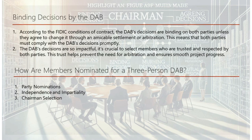For a three-person DAB, each party nominates one member, who must then be approved by the other party. Approvals cannot be unreasonably withheld or delayed. The nominated members should be independent experts who can act impartially and work well within the DAB to make unanimous decisions. If a nominee seems unlikely to strive for unanimity, approval may be withheld.